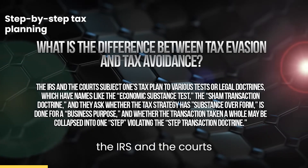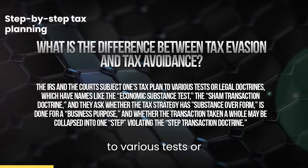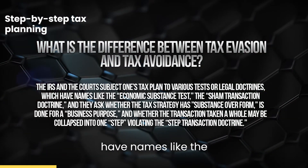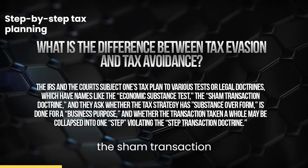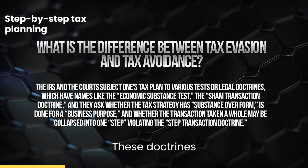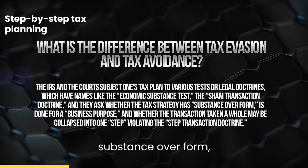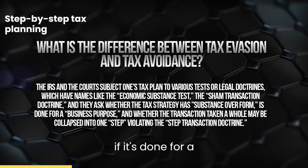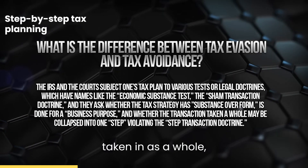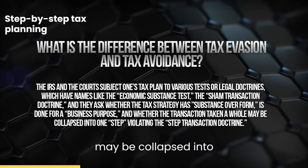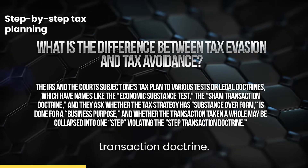To this end, the IRS and the courts subject one's tax plans to various tests or legal doctrines, which have names like the economic substance test and the sham transaction doctrine. These doctrines basically ask whether the tax strategy has substance over form, if it's done for a business purpose, and whether the transaction taken as a whole may be collapsed into one single step.